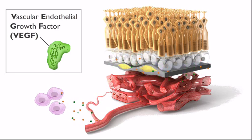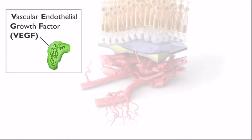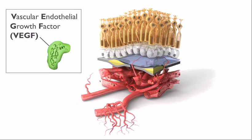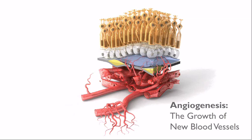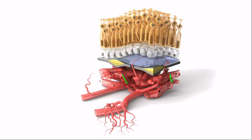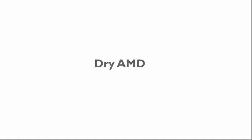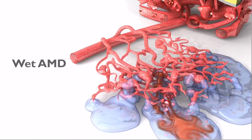The VEGF protein diffuses into the choroid, stimulating the growth of new blood vessels. This process is called angiogenesis. The new blood vessels sprout and grow into and through the weakened Bruch's membrane. At this point, the condition progresses from dry AMD to a more serious form called wet AMD.